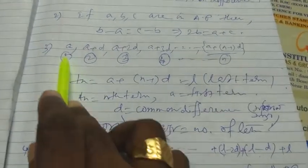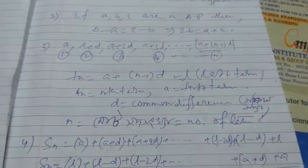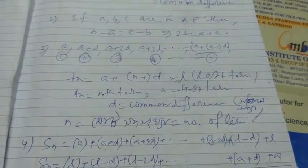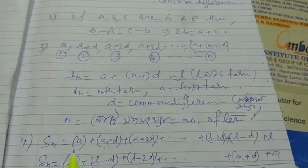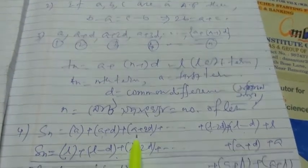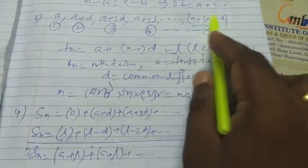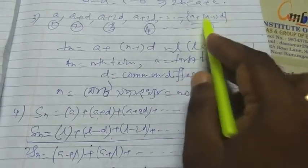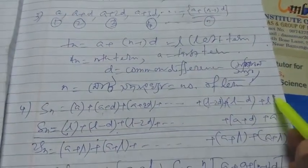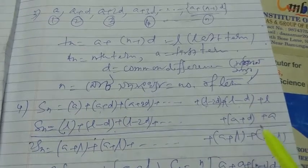If we add this series — a, a+d, a+2d — and let us assume the last term is l, then the previous term will be l minus d.